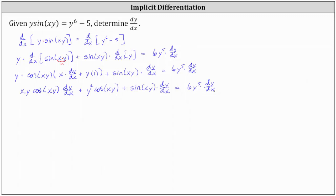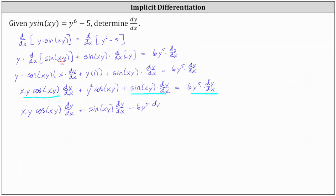Now we need to get all of the dy/dx terms on one side so that we can factor out dy/dx and solve for it. Notice right now we have three dy/dx terms, and two of them are already on the left. So let's subtract 6y to the 5th·dy/dx on both sides of the equation, which gives us xy·cosine(xy)·dy/dx plus sine(xy)·dy/dx minus 6y to the 5th·dy/dx. And let's also subtract y squared·cosine(xy) on both sides, which gives us on the right negative y squared·cosine(xy).